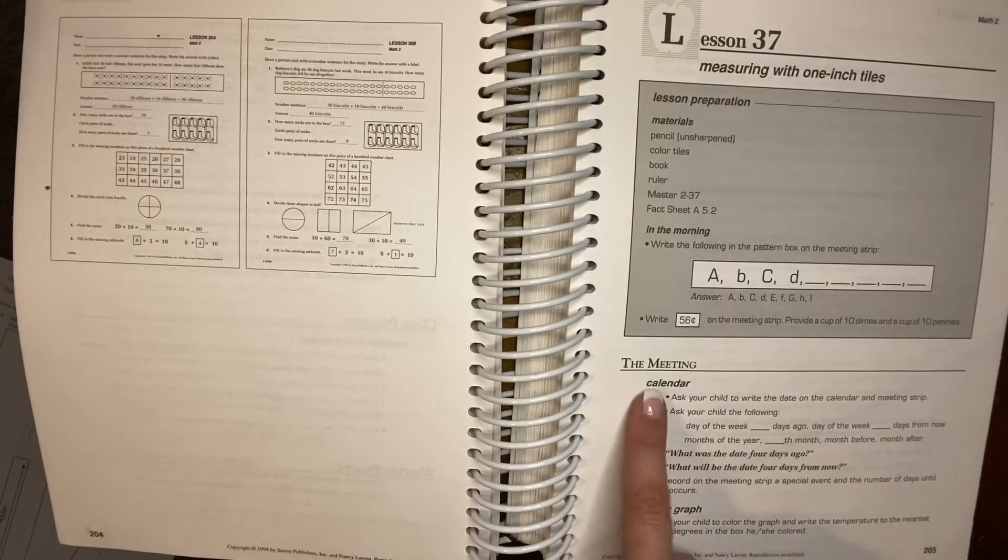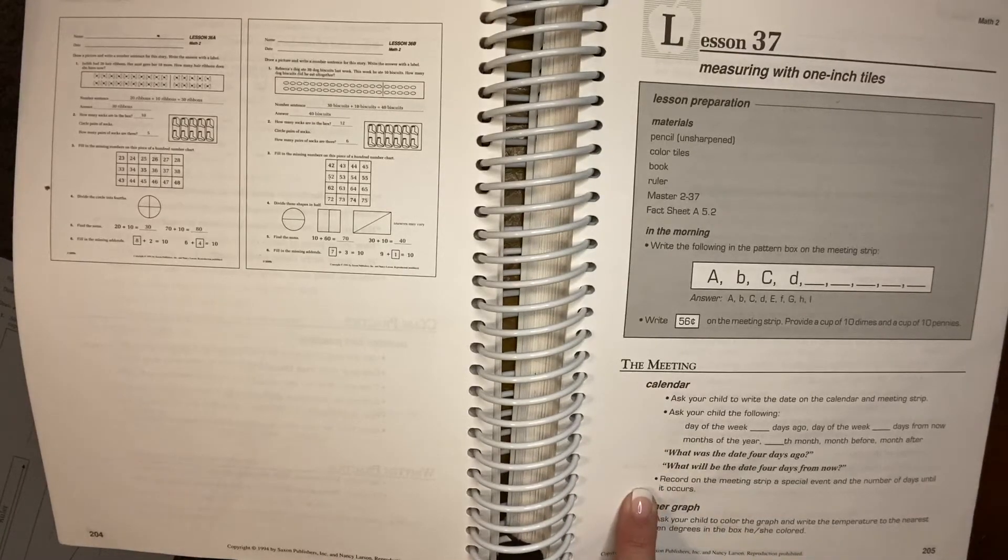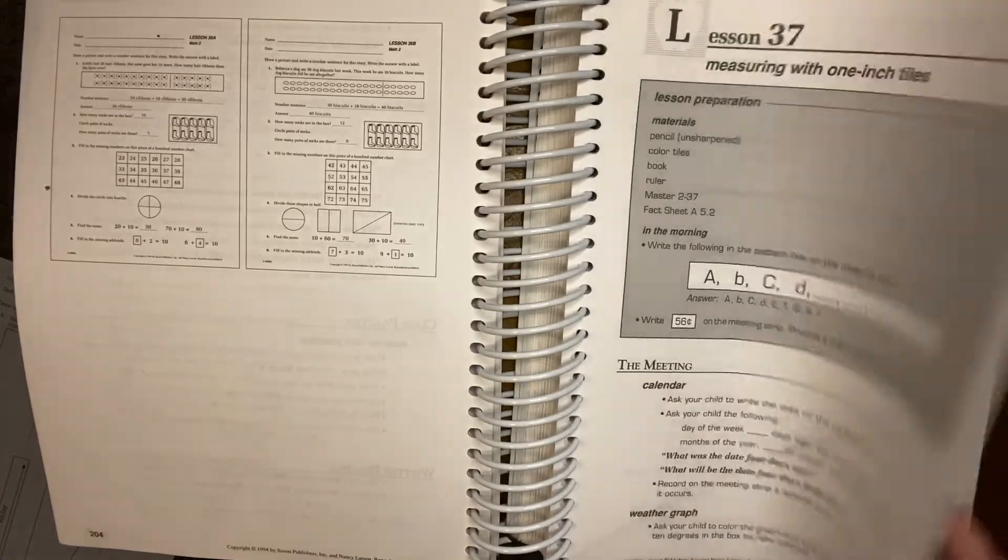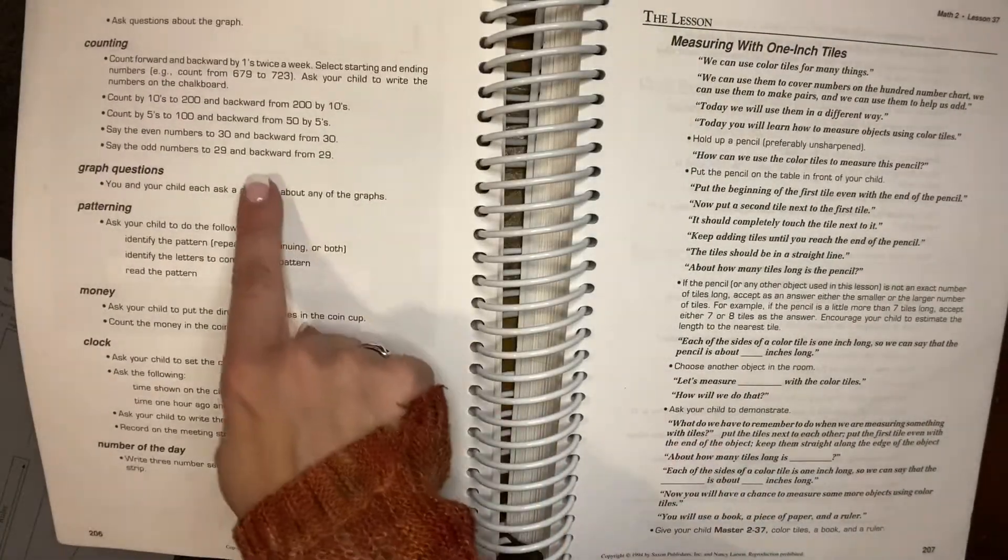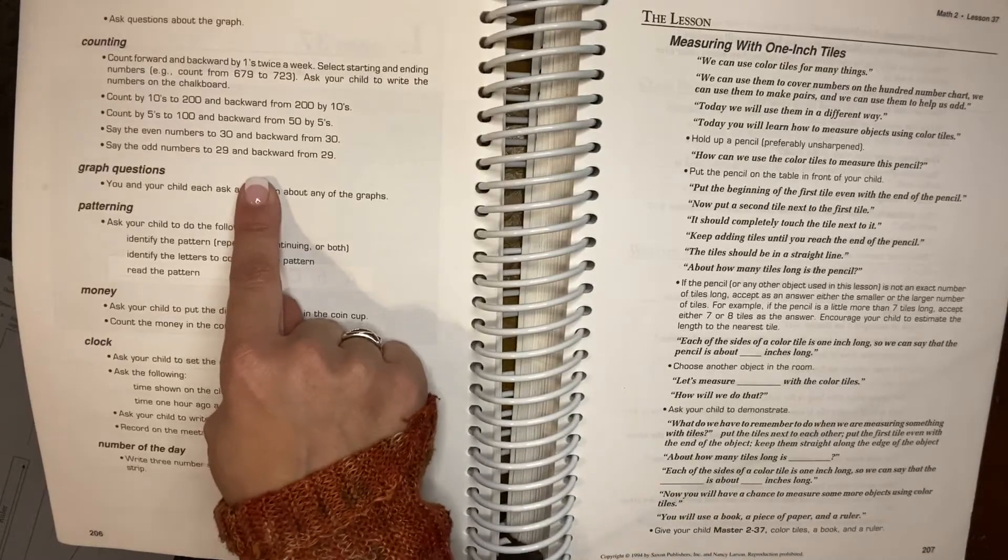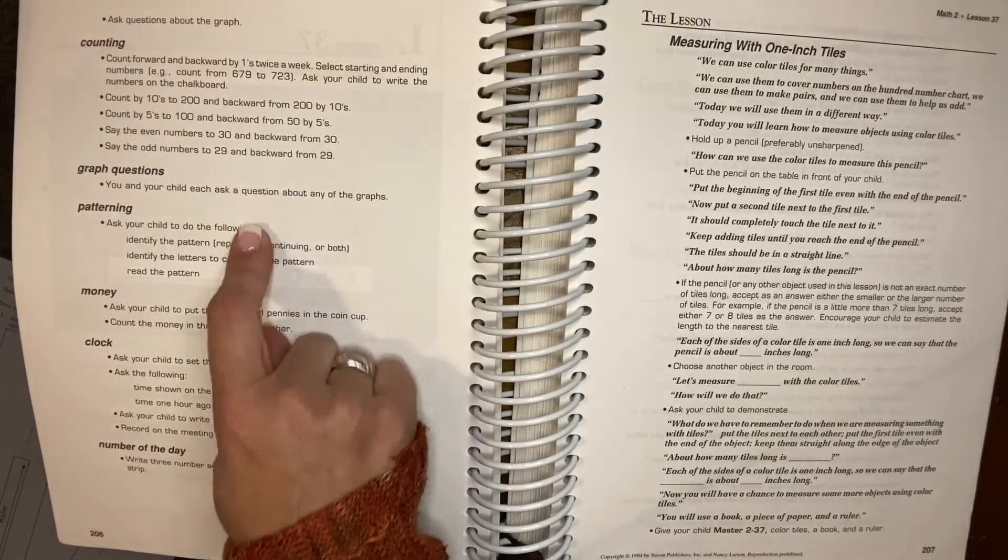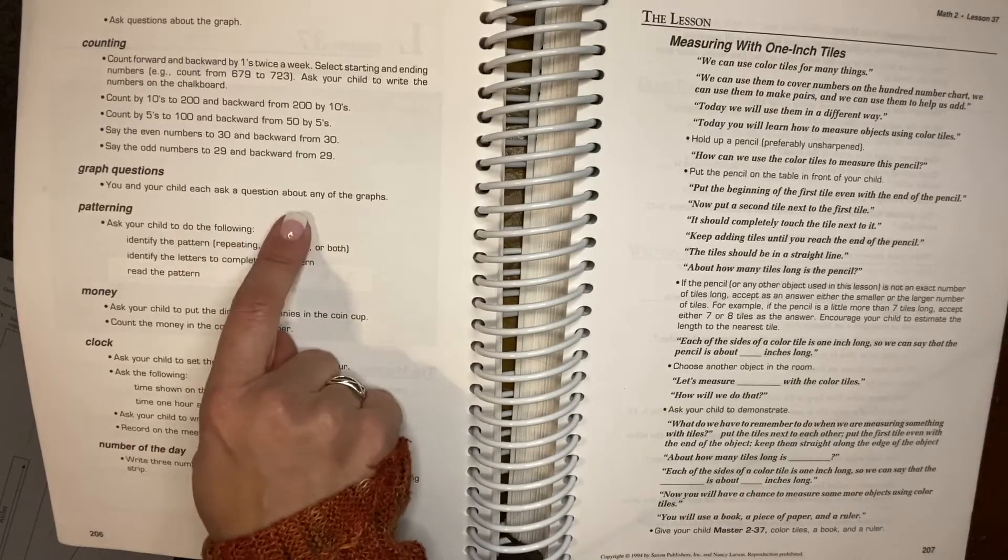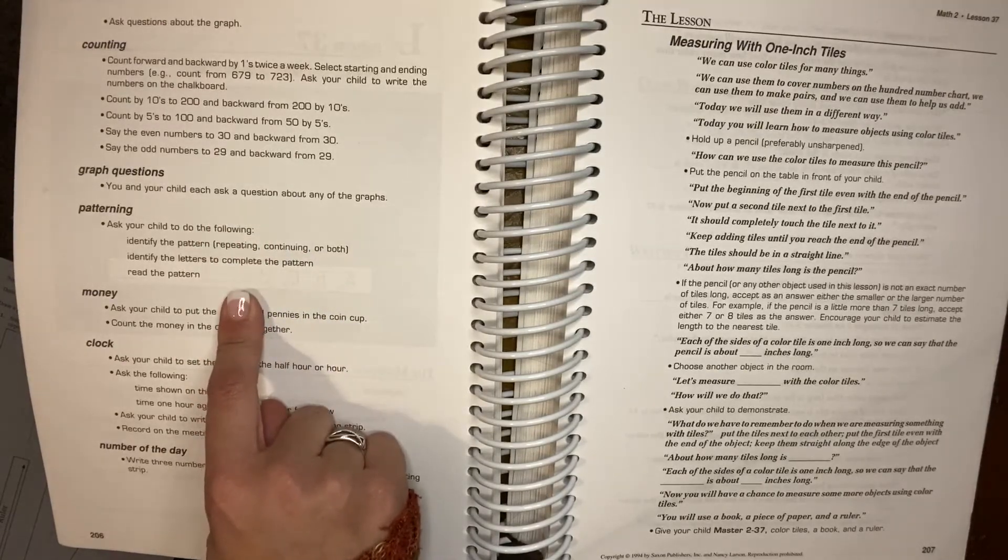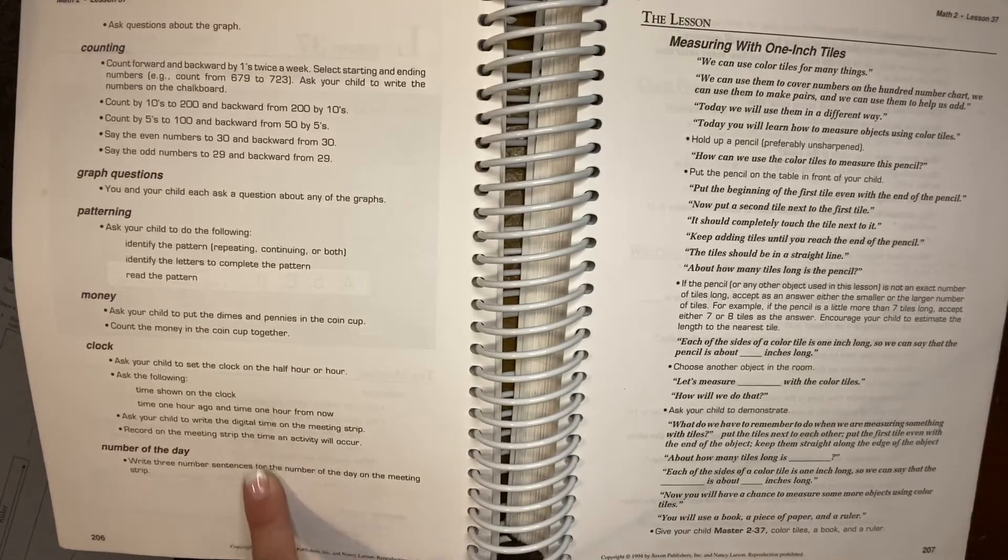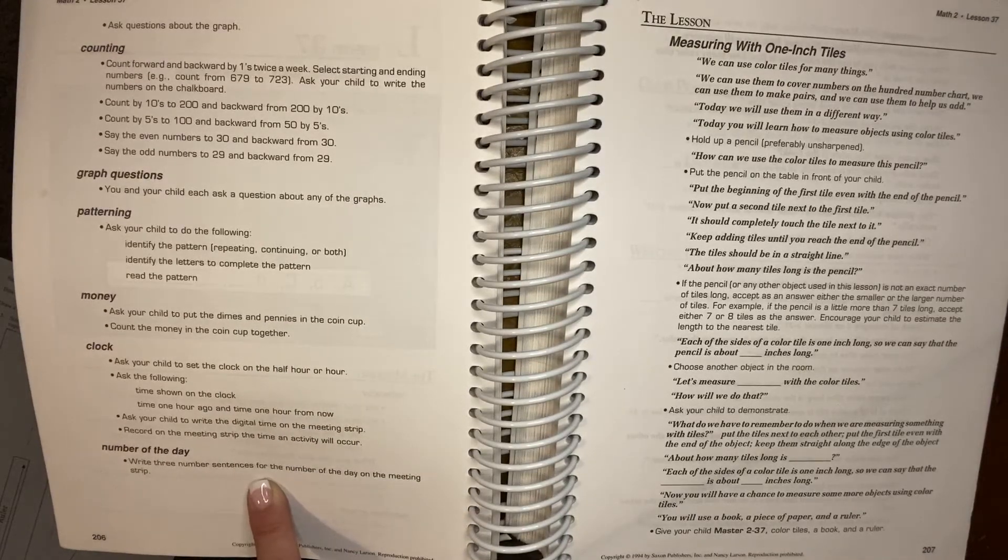But if you would like to do it, there's always a calendar section. They will label their own calendars, be keeping track of days and such. There's a weather graph for each day. Then they work on counting. This is usually counting by tens, counting by fives, counting forward, counting backward, all that type stuff. Then you ask questions about the graph. Then you do some sort of pattern. Then you work on money. Then you work on time with the clock. And then you talk about the number of the day.